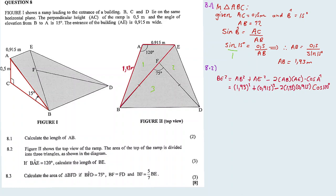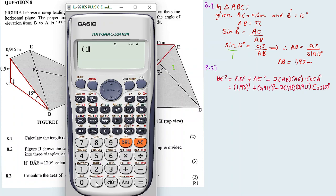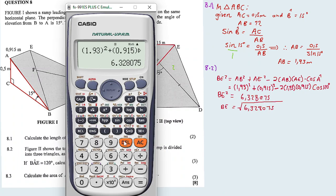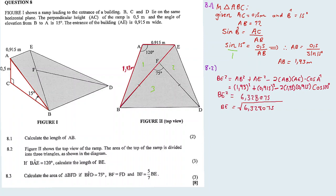Then we substitute. Let us calculate: 1.93 squared plus 0.915 squared minus 2 times 1.93 times 0.915 times cos 120 degrees. Our answer is 6.328075. So BE squared equals that, and then taking the square root of both sides, in three decimal places, our answer equals 2.516 meters.